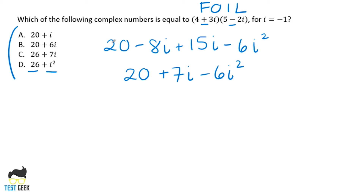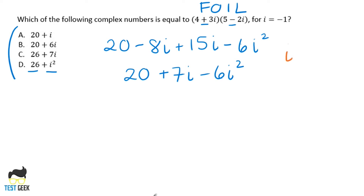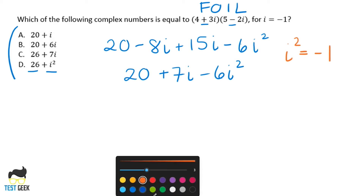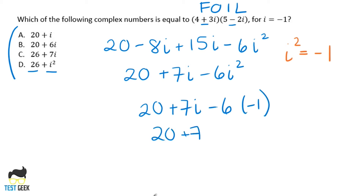So what is i squared? It's equal to negative one — this is where it's really important to remember that. Anytime you see i squared, i cubed, i to the fourth, you want to get it into a real number as quickly as possible. So we plug in negative one for i squared: 20 plus seven i minus six times negative one, which gives us 20 plus seven i plus six. Combining like terms: 26 plus seven i. Looking at our answer choices, that answer is C.